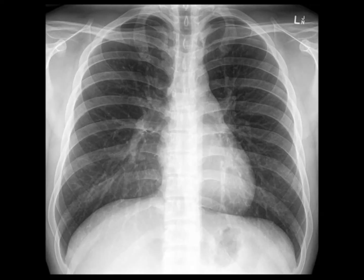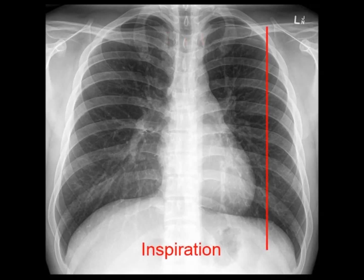To check rotation, look at the clavicular heads and spinous processes. If the spinous processes are halfway between the clavicular heads, the patient is normally rotated. Next, check for adequate inspiration by looking at the mid-clavicular line and seeing which anterior rib intersects the diaphragm at this point. It should normally be the 5th, 6th, or 7th. More ribs means the lungs are hyperinflated, often seen in COPD. Fewer ribs means the patient may not have taken a full breath when the x-ray was taken.